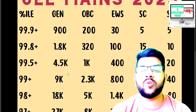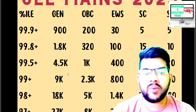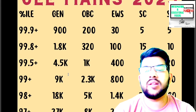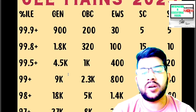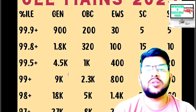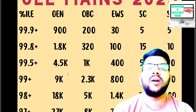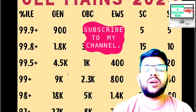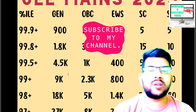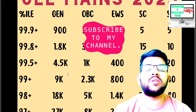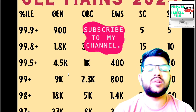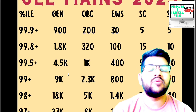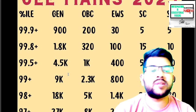For 97 plus percentile, your CRL rank will be under 27,000, OBC under 8,000, EWS under 2,200, SC 450, and ST 150.